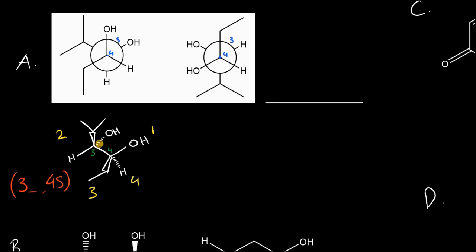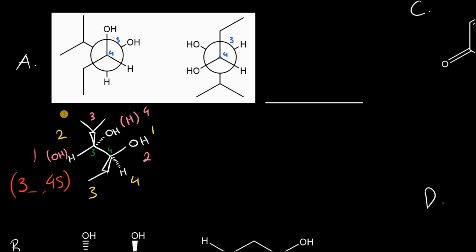At carbon 3, the highest priority group is projecting into the plane and the lowest priority group — the hydrogen — is on the plane. So we need to make a switch. We assign priority the same way: OH takes first, hydrogen takes fourth. Coming off carbon 3, the isopropyl is just hydrocarbon, but moving to carbon 4 it's bound directly to an oxygen, so that group takes second priority and isopropyl takes third. Drawing the arrow from 1 to 2 to 3 looks counterclockwise, but because of the switch it's not S — it's R.